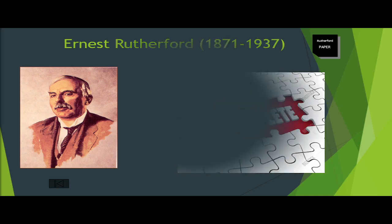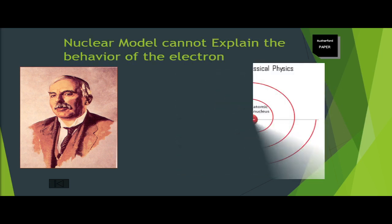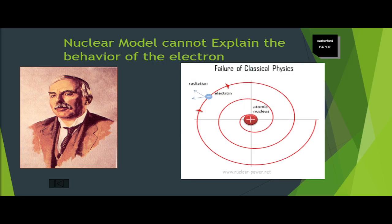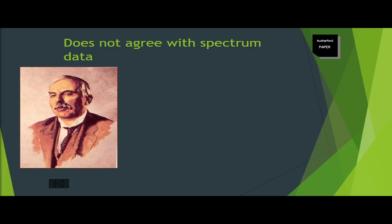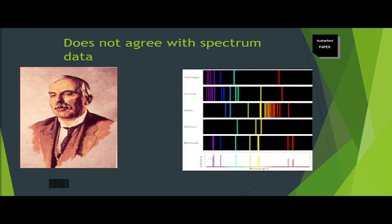Rutherford's model was still incomplete. It could not explain why the electron does not crash into the nucleus despite the attractive force between charges, nor could it explain how an accelerating charge must be losing energy. The model also could not explain different chemical properties of atoms. Another flaw involved the radiation emitted by the orbiting electron — the frequency of the radiation should be the same as the frequency of the orbit.